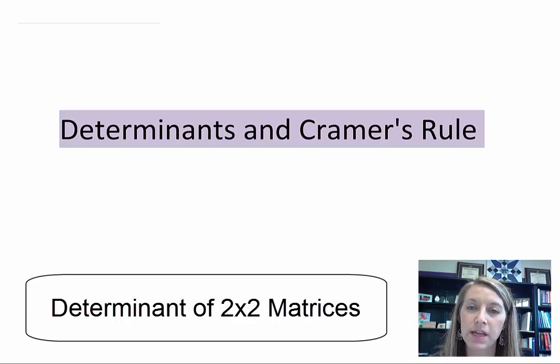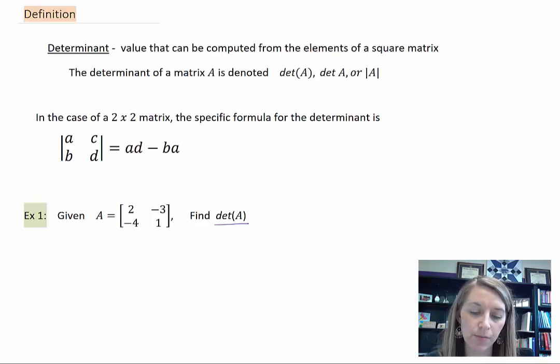This section is over determinants and Cramer's rule. The very first thing that we're going to do is define what a determinant is.